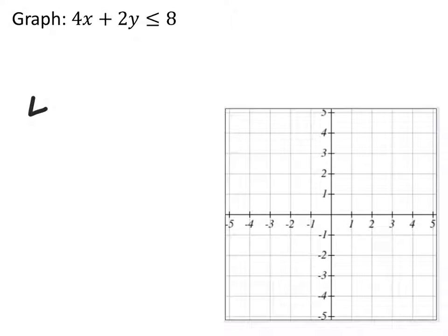This one, we've got 4x plus 2y is less than or equal to 8. Since it's equal to, we know it's a solid line.